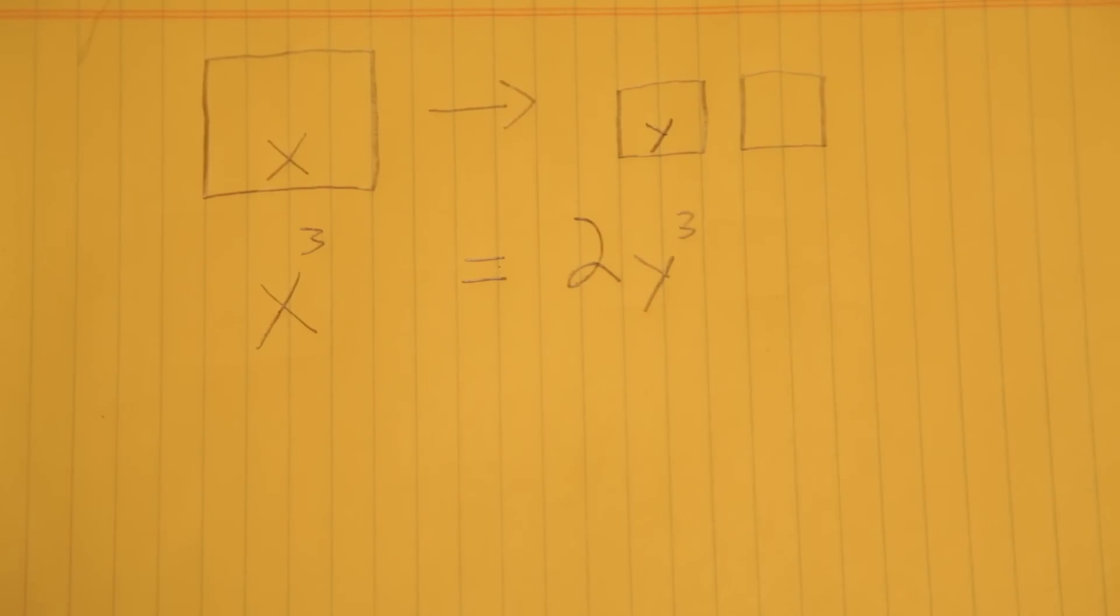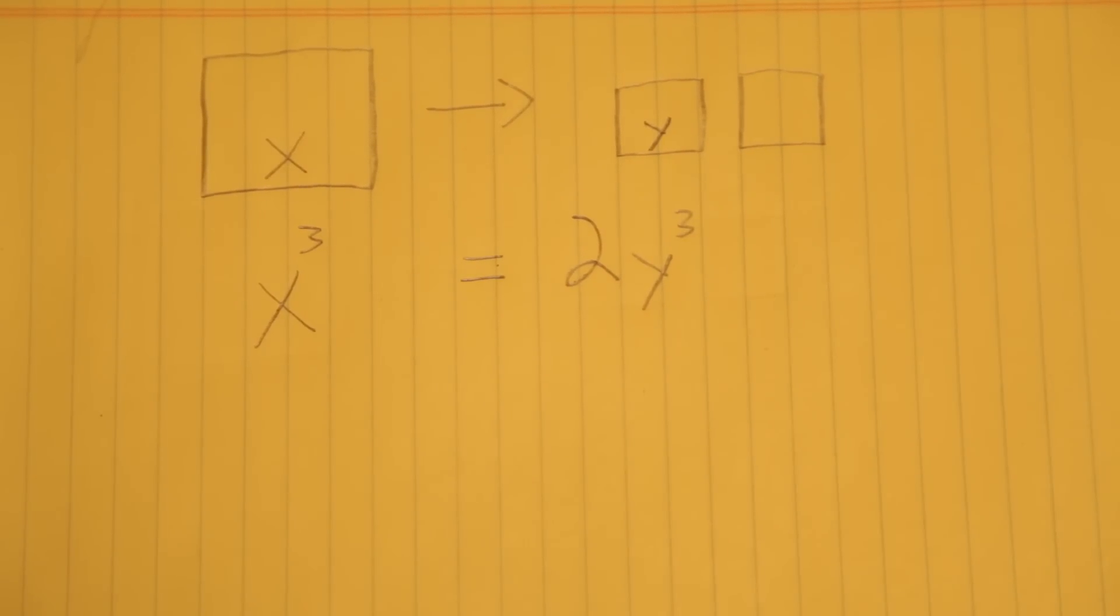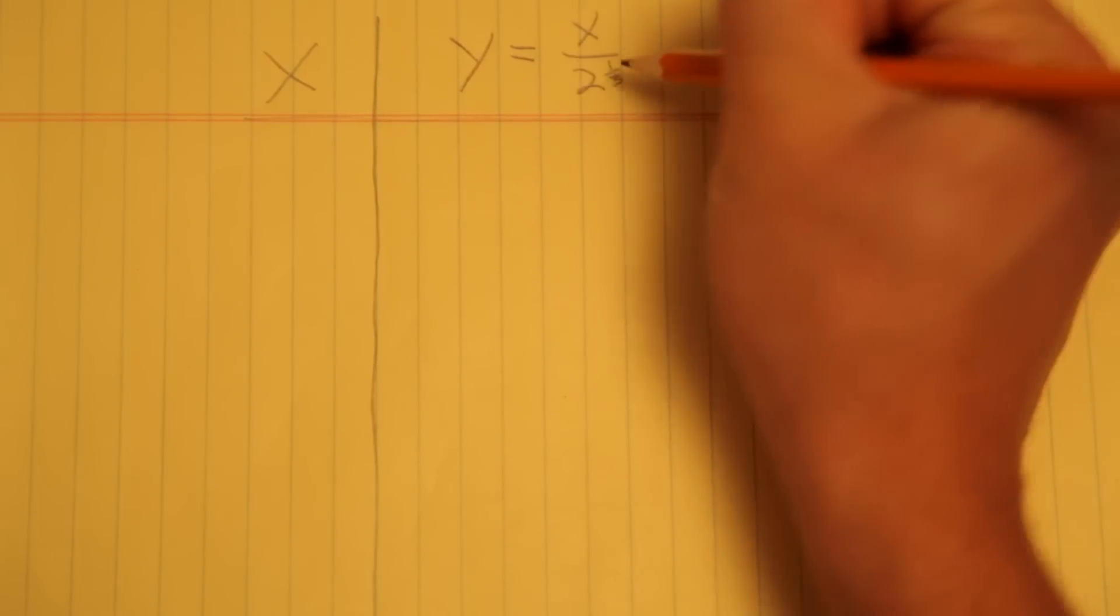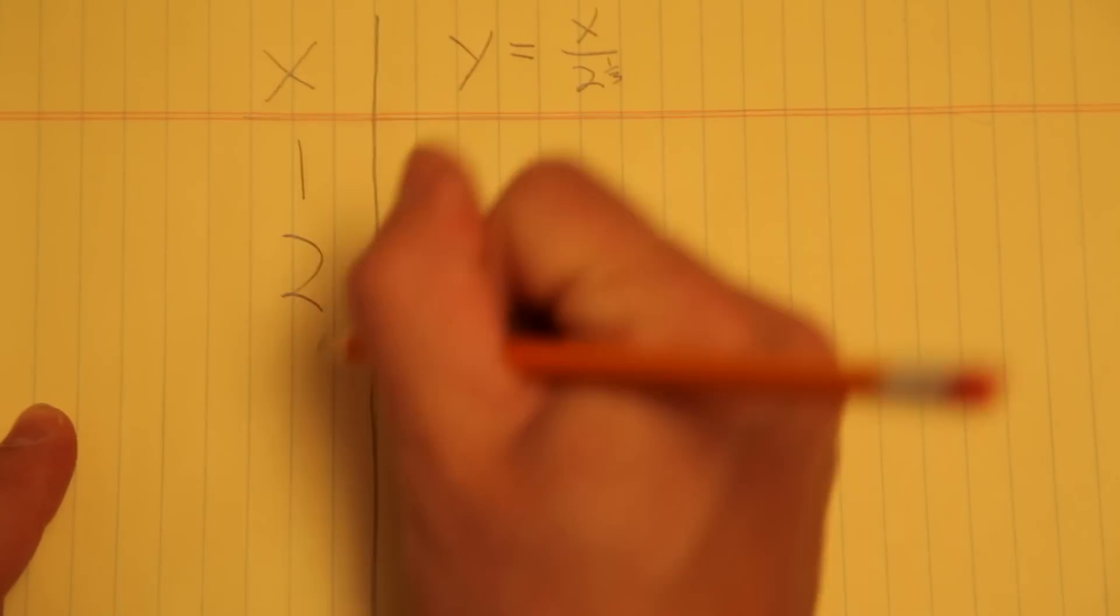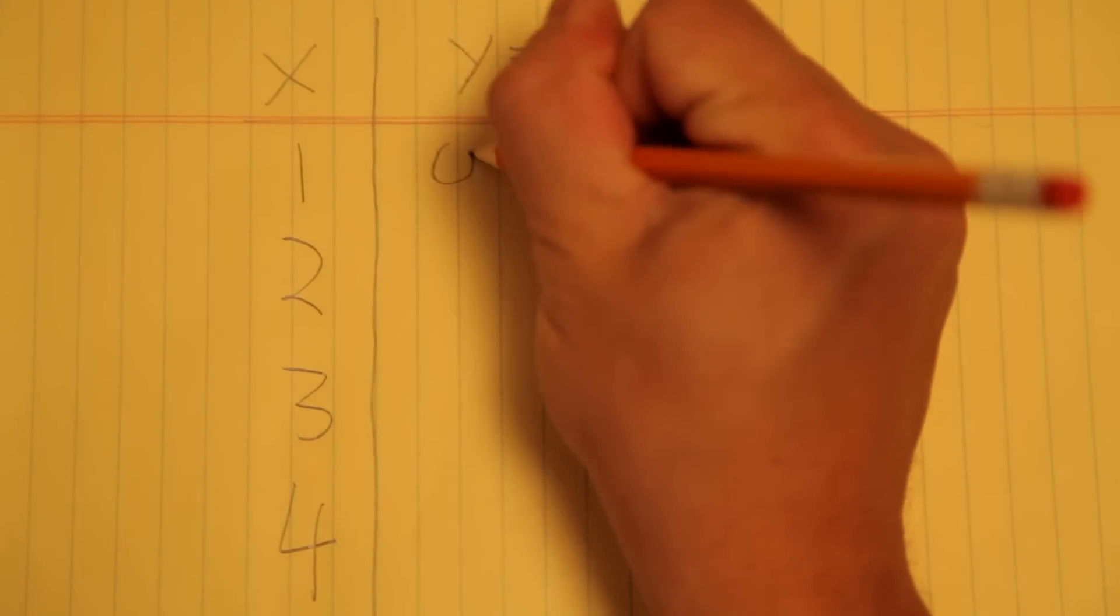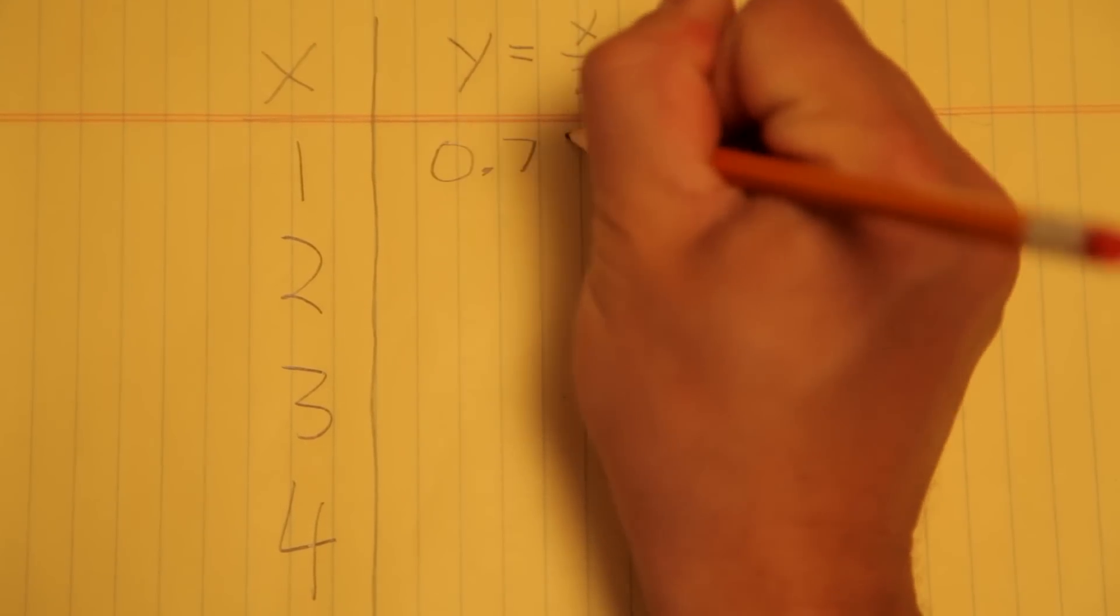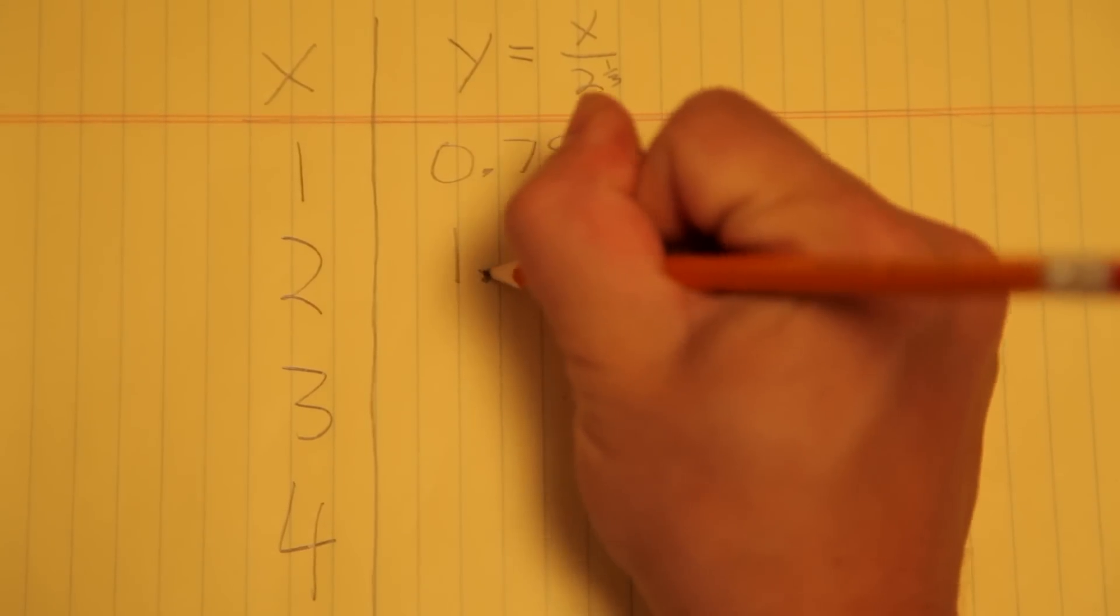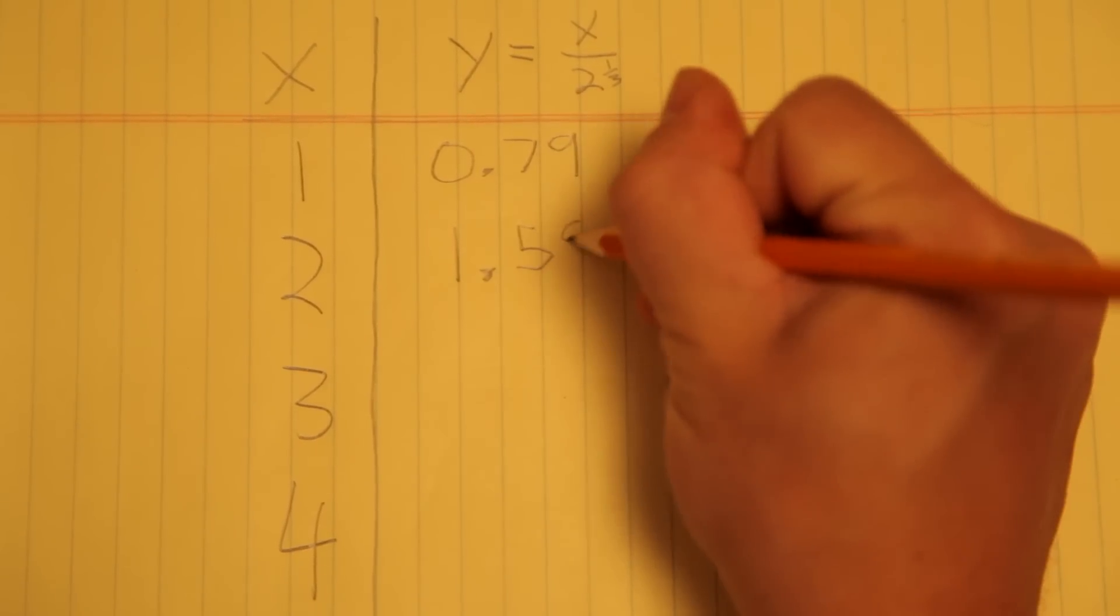And now we have an algebraic representation of the situation. So to answer any question of the form, given this box, what's the side length of the smaller boxes, we just rearrange the equation to isolate y so that y is a function of x and plug in the value of x to get y. Algebra allows us to build statements, known as polynomials, about the real world and solve them in a mechanical way.